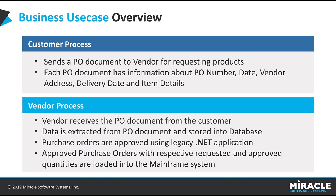In this slide I'm going to speak about the business use case overview. We have two processes: the first is the customer process and the second is the vendor process. In the customer process, the customer needs to send a purchase order document to the vendor — this document is a legally binding document between a supplier and a buyer, containing PO numbers, purchase order data, vendor details, and item details. In the vendor process, the vendor needs to approve the quantity based on requested quantity and availability, done through a .NET-based Windows application. All purchase order related data extracted by the robot is available on this application. Once the approval process is complete, the user triggers an attended bot to log the data into the mainframe application.